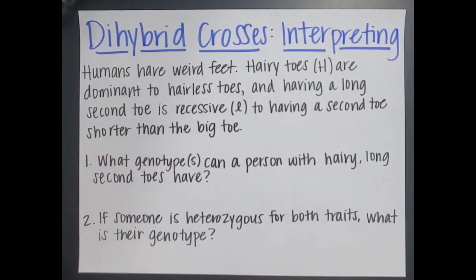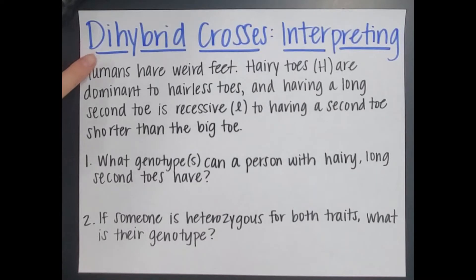Our genetics how-to of the day is dihybrid crosses. These are genetics problems that deal with two traits at the same time. Monohybrid crosses from our earlier video dealt with only one trait — figuring out what the potential offspring could look like. This time we're looking at two traits. That's where the 'di' in dihybrid comes from. Today we're going to look at interpreting and then go through an example as well.